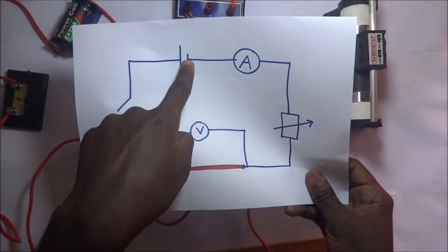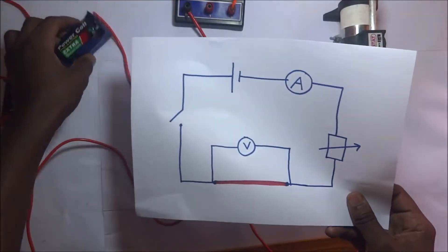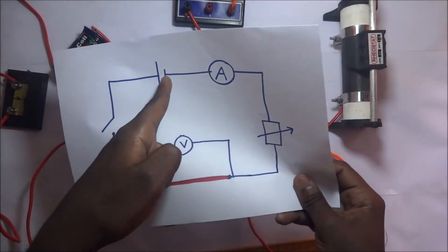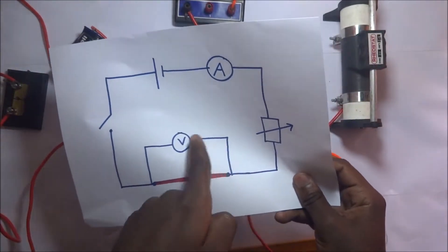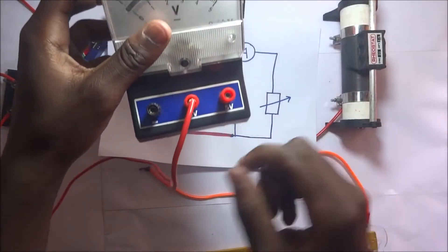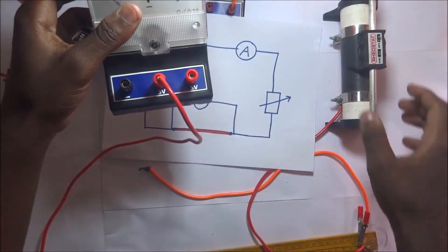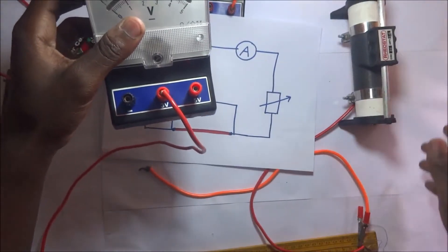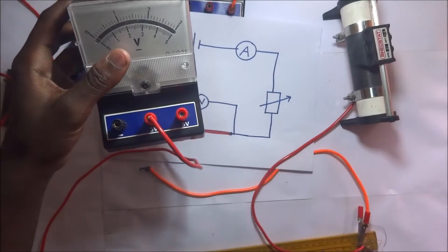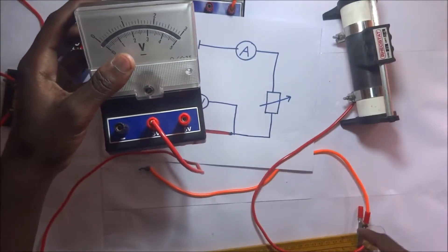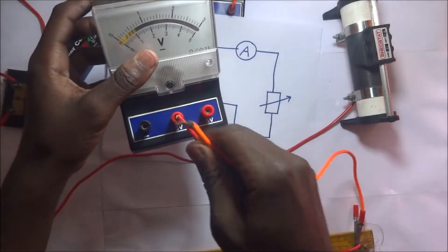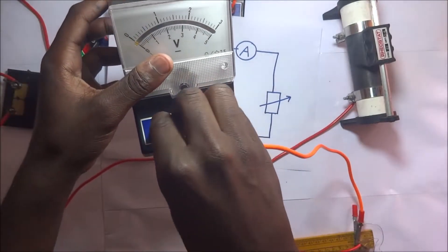According to our circuit diagram, this is the negative part from the cell, so we connect this negative to the voltmeter correctly. The negative portion of the voltmeter is here. Following the circuit, this is our rheostat — the wire gets out of here and gets to this point. With this terminal here, this wire is supposed to be connected to the negative part right there.